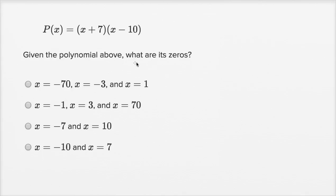Given the polynomial above, what are its zeros? So the zeros of this polynomial are going to be the x values that make it equal to zero. It's going to be the x values that make this expression equal to zero.